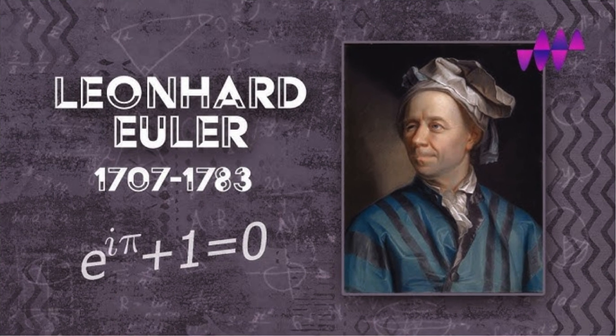Later Life and Legacy: Euler lost his eyesight in his later years, but his mind remained sharper than ever. He continued to dictate groundbreaking work at a pace few could match. Euler died on September 18, 1783 in St. Petersburg, Russia. By the end of his life, he had produced more publications than almost any other mathematician in history. His discoveries laid the groundwork for computer science, physics, engineering, and even modern internet security. Euler is remembered not only as a genius, but also as a teacher who shared knowledge with the world. Now, let's talk about his works.